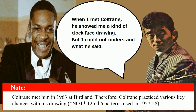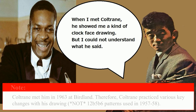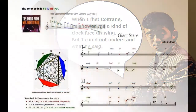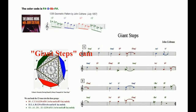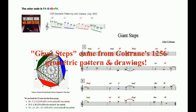Coltrane was doing something different in 1963, because he plays a lot of Dm7 modal tunes like Impressions. Coltrane was using his geometric drawing, and the melody of Giant Steps came from Coltrane's 1-2-5-6 geometric pattern and geometric drawings. This is definitive.